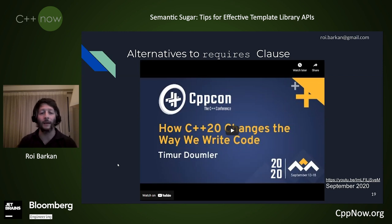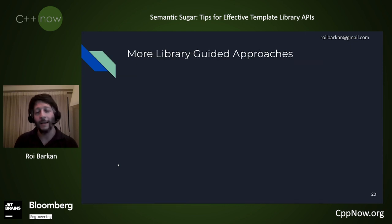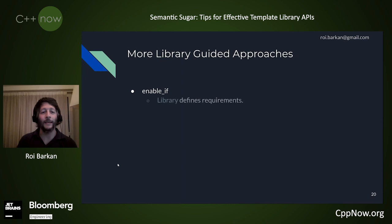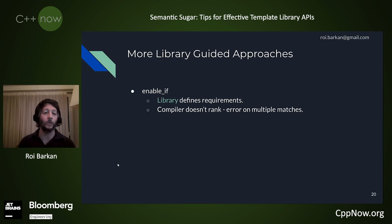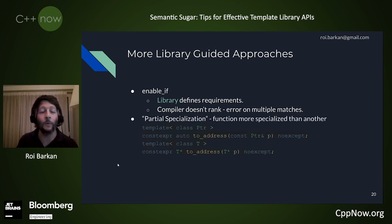That was the best we had before concepts. Still, if you want you can use enable_if — there might be cases where you want to. It's a library-guided approach where the library defines its requirements using enable_if statements. But the compiler doesn't do any ranking here — it just checks which overloads match the requirements. In case of multiple matches, it causes a compilation error rather than choosing the best one.